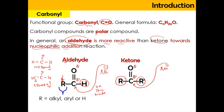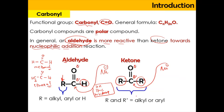Aldehyde is more reactive because it has a small atom — hydrogen — on one side, so it is easier for the nucleophile to enter due to less steric hindrance. Another factor is the electron-donating group, but essentially it is sufficient to understand it in terms of steric hindrance. For ketone, the R and R' here can also be any alkyl or aryl group.